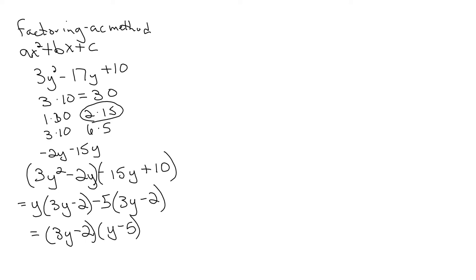Another example is if you have something like this: 12m to the third plus 10m squared minus 12m. Well before we do anything else we see that we have a common factor of both a 2 which goes into 12 and 10 and an m. So we're going to take out a GCF. When we take it out we're going to take out a 2 and an m. So what do we have left? 6m squared plus 5m minus 6.